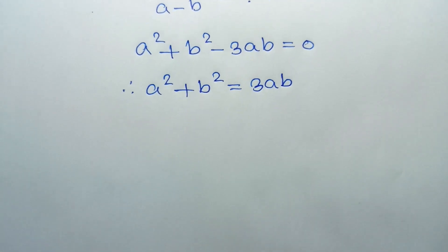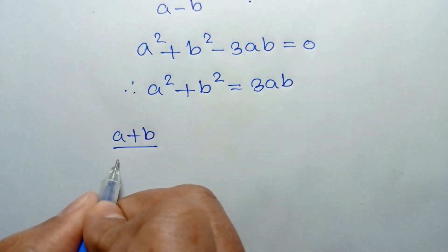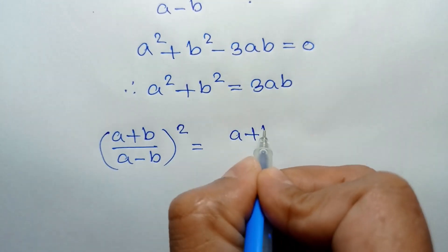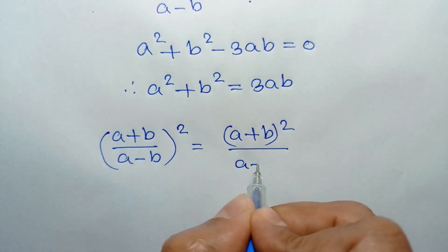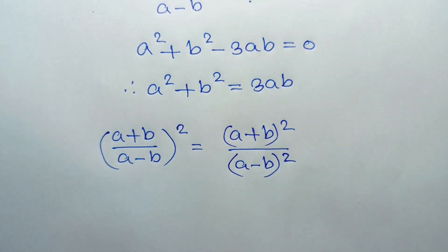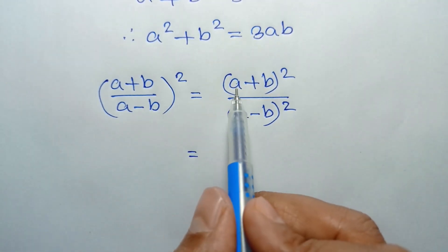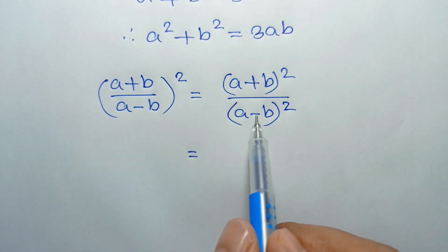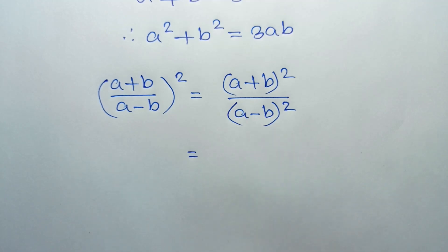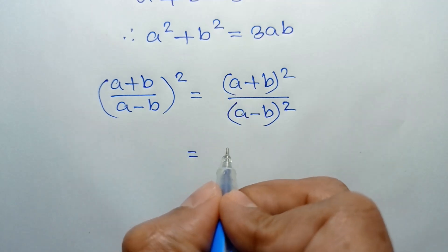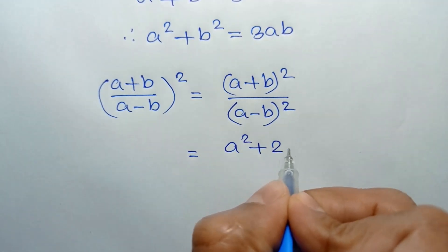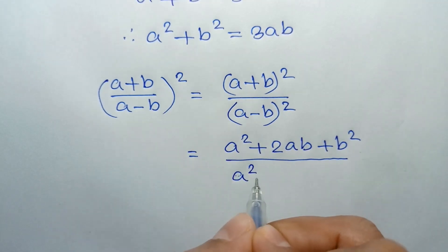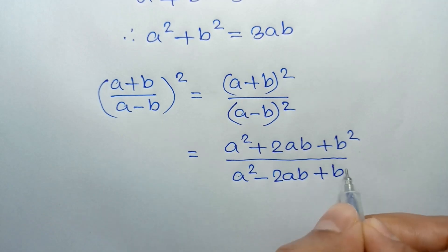Now [(a+b)/(a-b)]² is equal to (a+b)² over (a-b)². Applying the formula, (a+b)² = a²+2ab+b² and (a-b)² = a²-2ab+b². So we can write it as (a²+2ab+b²) over (a²-2ab+b²).